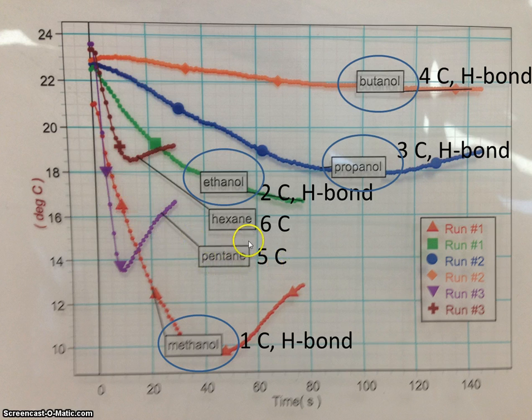Pentane has five carbons and hexane has six carbons. So let's look at the purple slope compared to the red slope. If you look closely, the purple slope is just a little bit steeper, meaning that it evaporated just a little bit quicker.